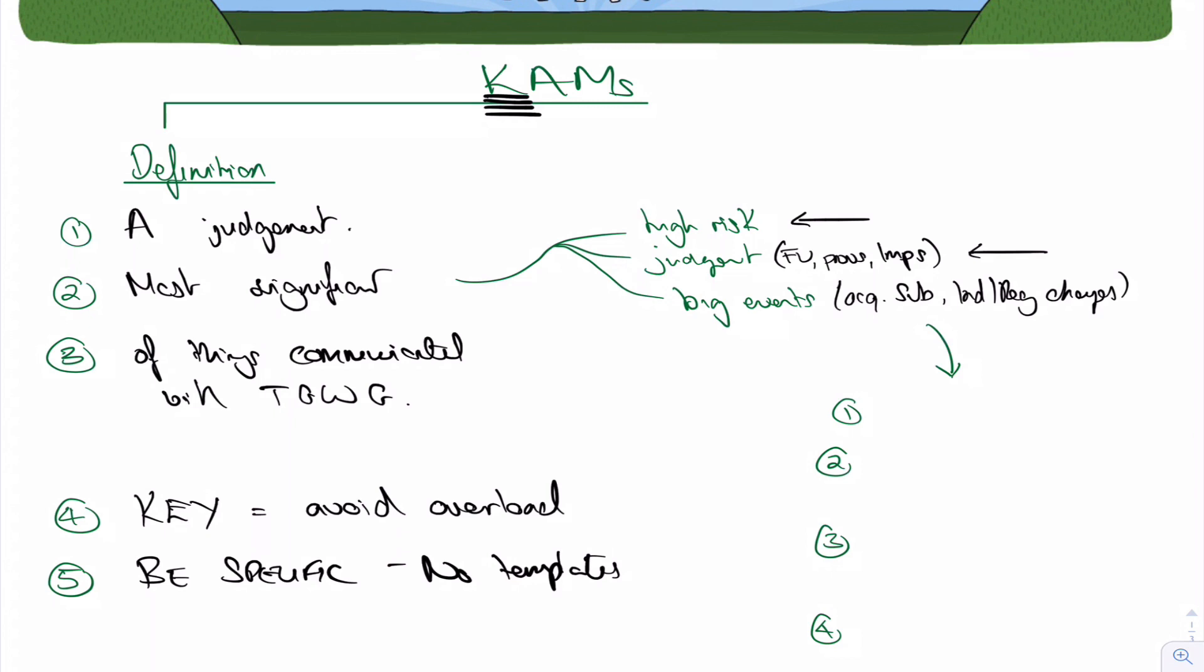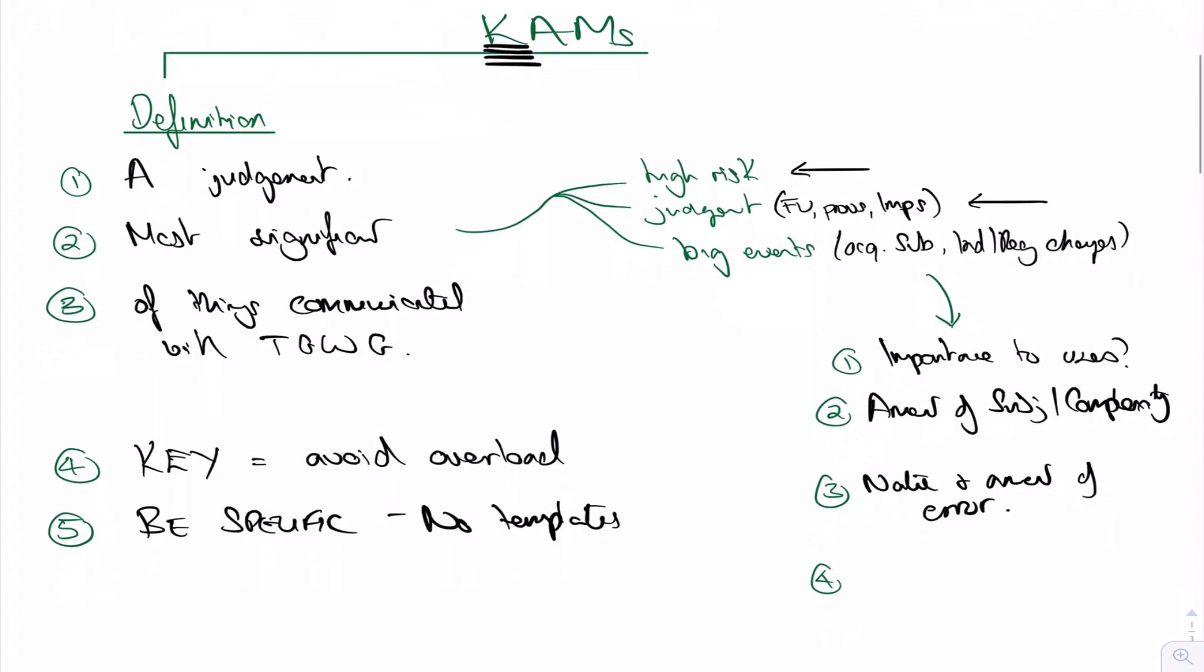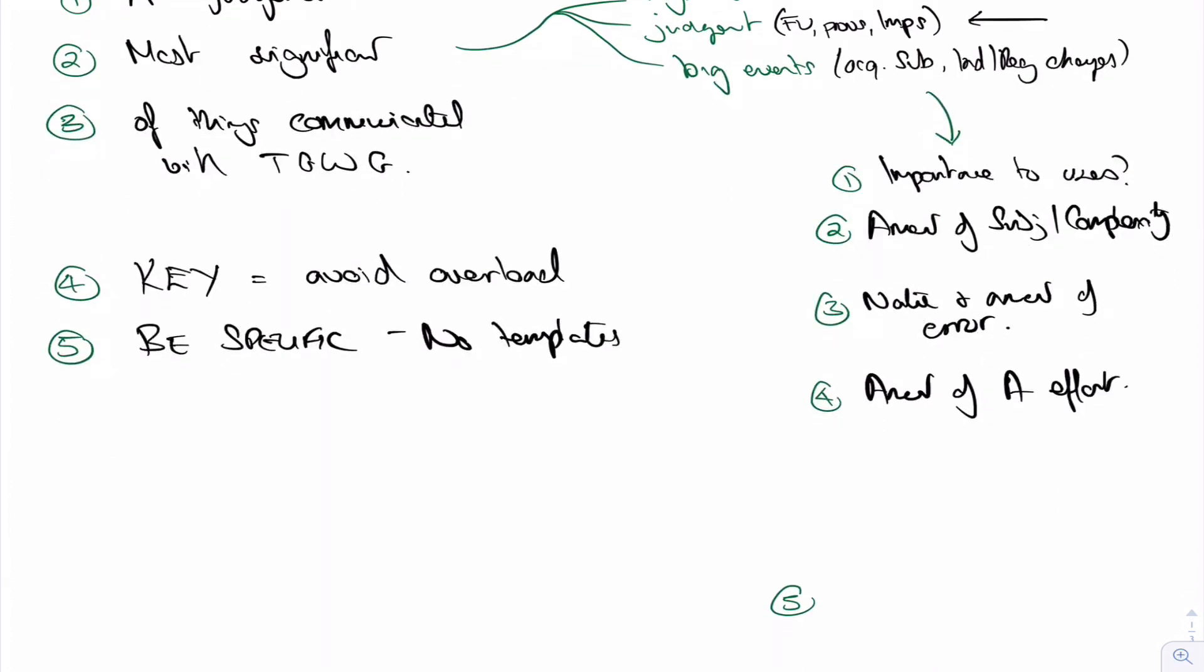I thought it would be a good idea to help you decide what we decide that is the most significant. The first thing is, it's important to the users. How important is it for them to know? What was the amount of subjectivity? What was the amount of complexity involved in this issue? What was the nature and the amount of any error due to the matter? What was the amount of effort that we put in, auditor effort? And when we're talking about auditor effort, we're talking about how much specialist knowledge did we need, how much did we need to go to external consultants, how much time did we spend on these things?